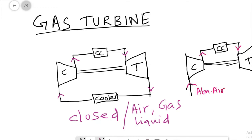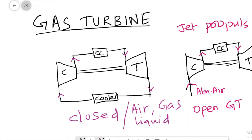This is called the open gas turbine cycle. The open gas turbine mainly depends on the atmosphere. This open type gas turbine is used in jet propulsion. Jet propulsion is the study of aircraft engines where the open gas turbine is used as the main engine. This cycle works on a specific thermodynamic cycle that will be covered in coming classes.